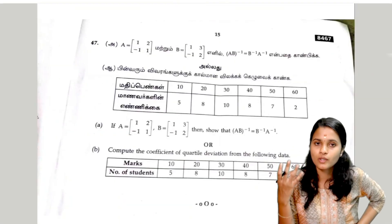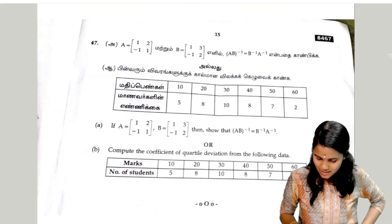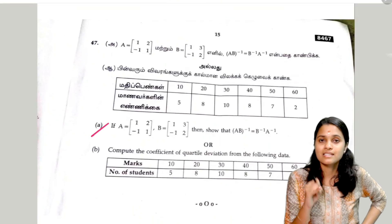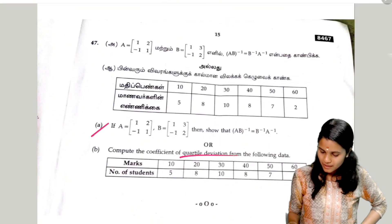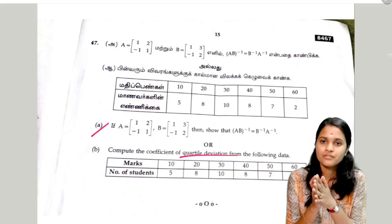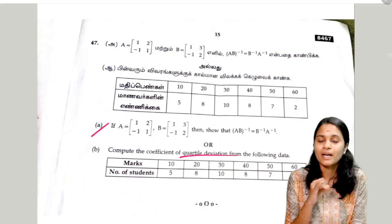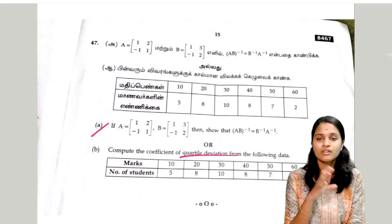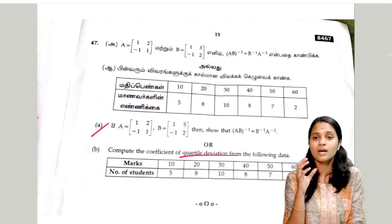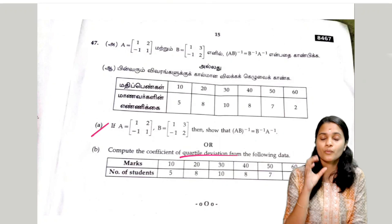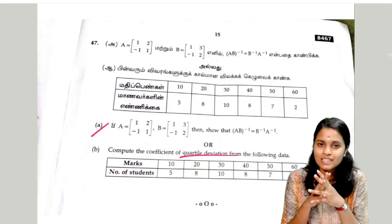The 47th question is the last question — option A, just get the inverse proof. The next question is quartile deviation — get the proof using all the formulas given. All the questions are very easy, the question paper is very easy, all the marks are achievable. Thank you.